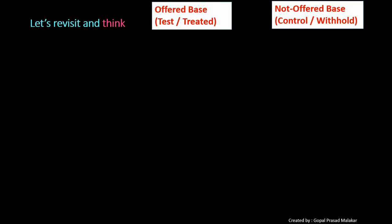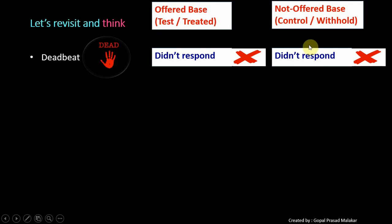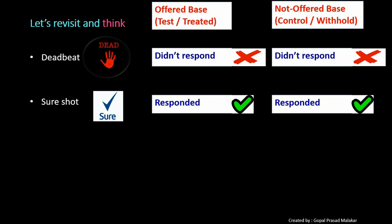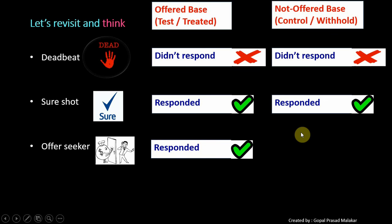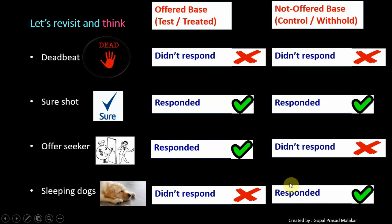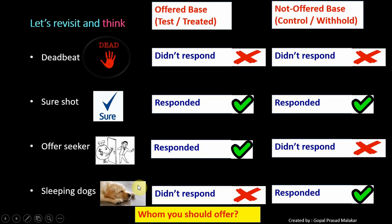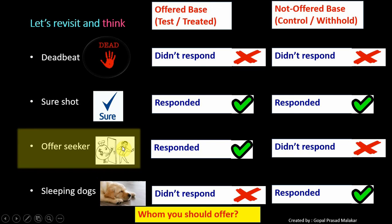Now let's look at all four profiles side by side. Deadbeats will not respond whether you give an offer or not. Sure Shots will respond in both situations. Offer Seekers will respond when you give an offer but not otherwise. Sleeping Dogs will not respond if you give an offer. So if you ask whom the offer should be given to: there's no point giving it to Deadbeats because they won't respond; no point giving to Sure Shots because they'll respond anyway; and definitely no point giving to Sleeping Dogs because it works negatively. The only candidate for the offer is the Offer Seeker — this is the only group you should target.